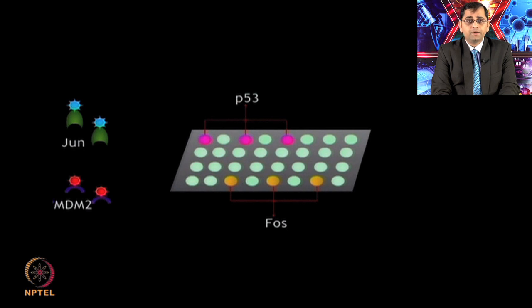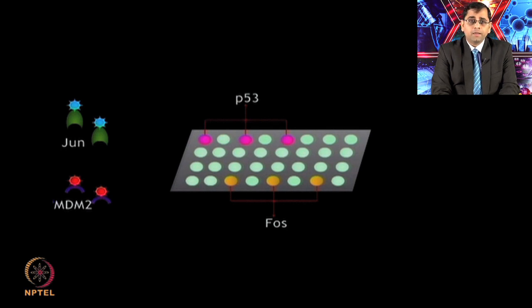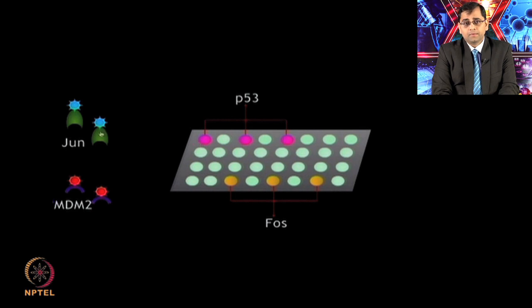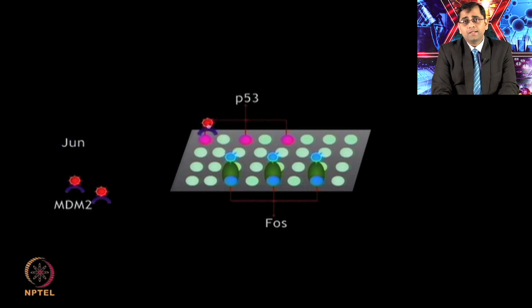Certain well-characterized proteins can be printed on arrays as a proof of concept. Well-characterized proteins are printed on the array surface along with their corresponding query molecules labeled with different fluorescent dyes. Using these interactions, protein interacting pairs such as Jun and Fos, and P53 and MDM2, can be matched. On the array surface both P53 and Fos proteins are present — when the Jun protein is added it interacts with Fos, and MDM2 protein interacts with P53. Once the interaction is established, these signals can be detected using a microarray scanner.